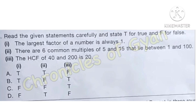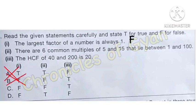For example, the largest factor of 19 is 19 itself, and the largest factor of 3 is 3 itself. So Statement 1 is incorrect — False. This means options A and B are eliminated, and we are left with options C and D.